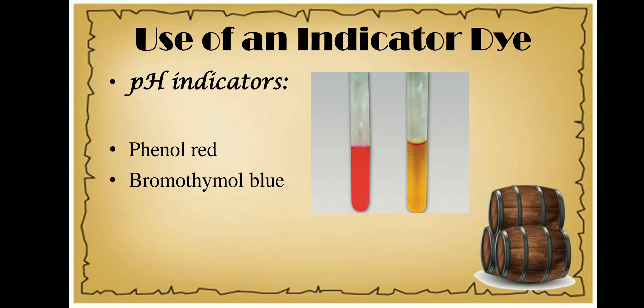Hello everyone. In my previous video we learned about crowded plate technique, oxyanography, and enrichment culture technique, which are part of primary screening techniques. In this video we are going to learn the last technique: use of indicator dye. In this technique we detect organisms which are producing organic acids and alkalis, using pH indicators like phenol red, bromothymol blue, and neutral red.